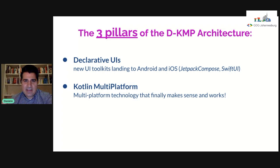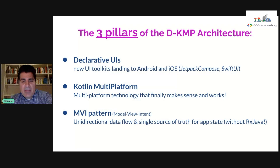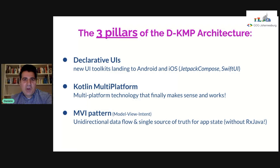The third pillar is the MVI pattern. The MVI pattern is based on unidirectional data flow and a single source of truth for the app state. In our architecture, we are not using RxJava for this, but we are using the new components that Kotlin made available less than one year ago.